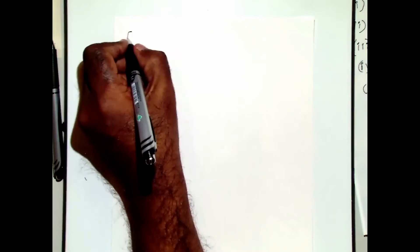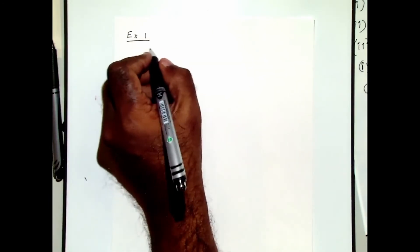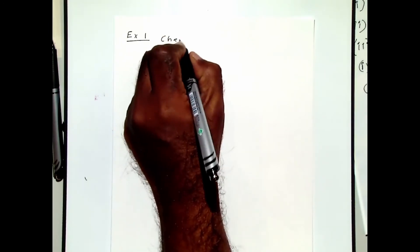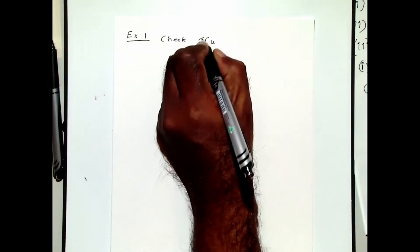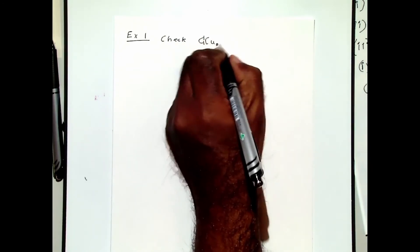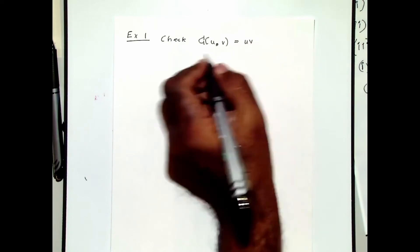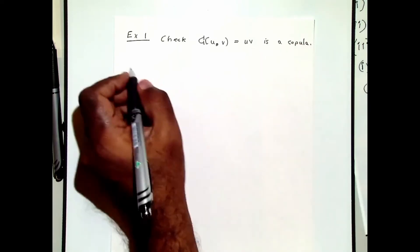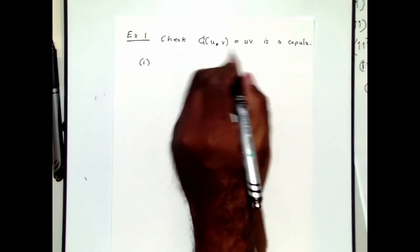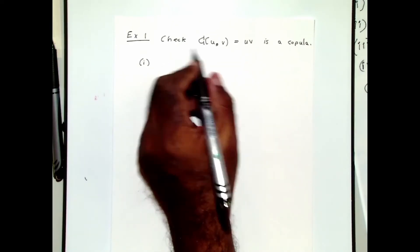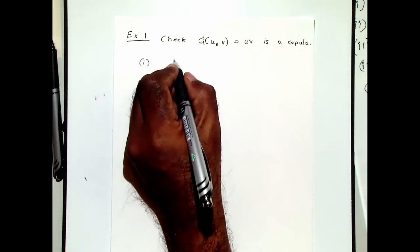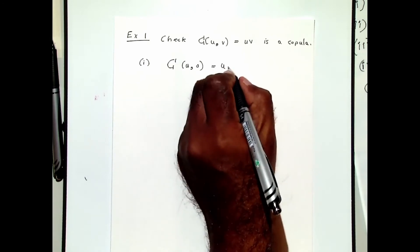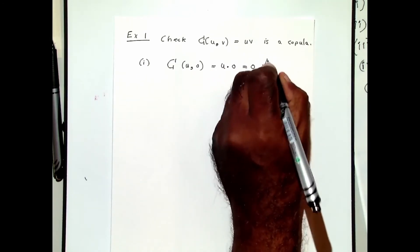This is example one. This is the independence copula mentioned earlier, and we want to check if it is indeed a copula. Condition one is C(u, 0) which is u times zero, which is zero, so hence it is satisfied.